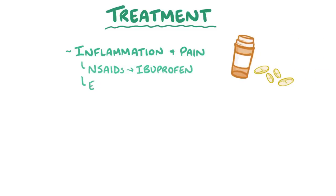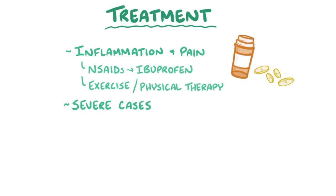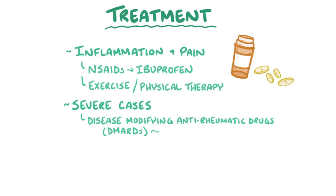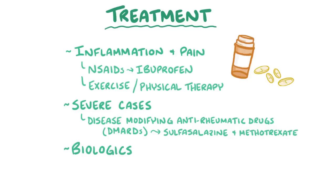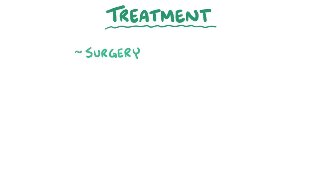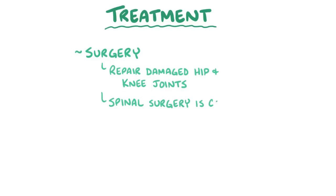Inflammation and pain from ankylosing spondylitis is usually treated with non-steroidal anti-inflammatory drugs, like ibuprofen. The pain can also be relieved by exercise or physical therapy. In more severe cases, disease-modifying anti-rheumatic drugs, or DMARDs, like sulfasalazine and methotrexate can be helpful. Newer therapies called biologics can also be useful, because they block the actions of cytokines like tumor necrosis factor alpha and the interleukins. Surgery can repair damaged hip and knee joints, but spinal surgery is typically considered risky and is rarely performed.